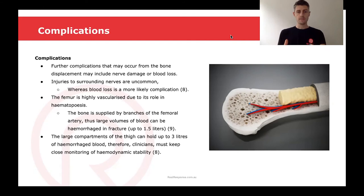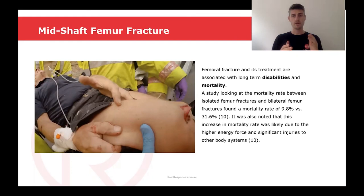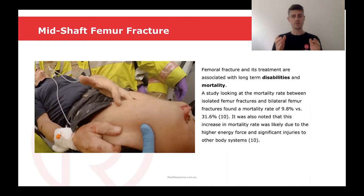Therefore, if we're assessing a patient who has a fractured femur, we must keep a close monitor of their hemodynamic stability. Femoral fracture and its treatment are associated with both long-term disabilities and mortality. A study looking at the mortality rate between isolated femur fractures and bilateral femur fractures found a mortality rate of 9.8% versus 31.6%, so quite a high rate of death. It was also noted that this increase in mortality rate was likely due to the higher energy force and significant injuries to other body systems.